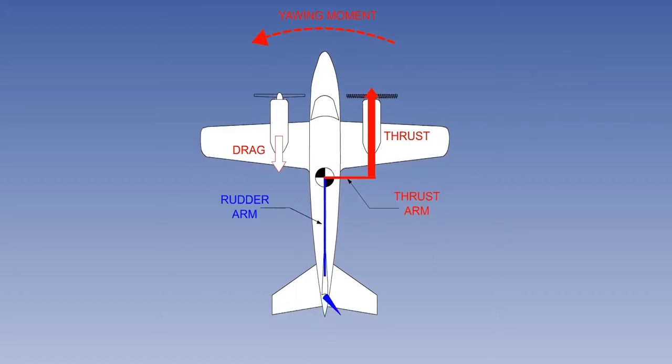If rudder is applied to counter the yaw, it will generate a moment, which is the product of the rudder force, multiplied by the distance between the rudder centre of pressure and the CG.